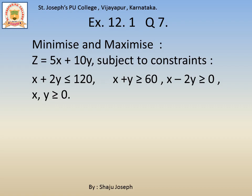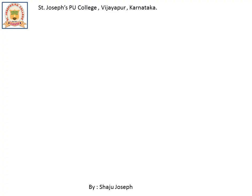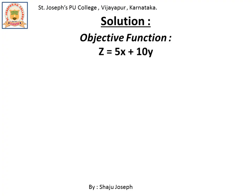Hi everyone. We shall look into the solution of question number 7 from exercise 12.1. You can pause the video and take down the question. Let us go to the solution now. The first part is identifying the objective function: Z is equal to 5x plus 10y. Let us have a look at the constraints.